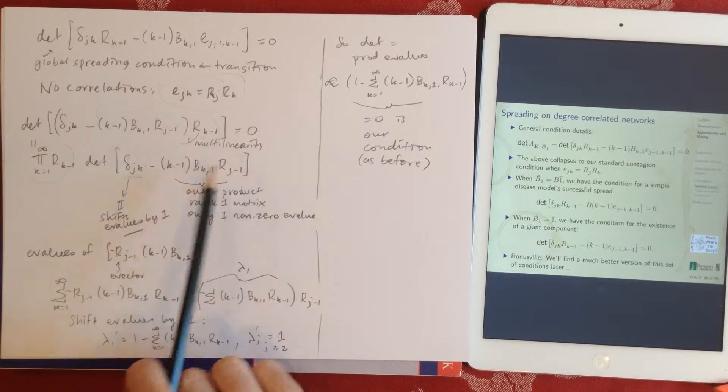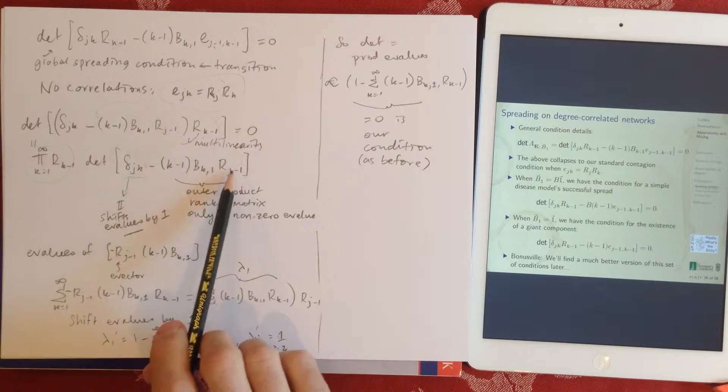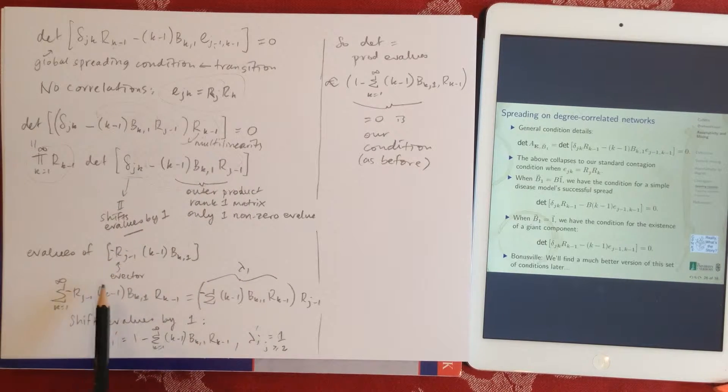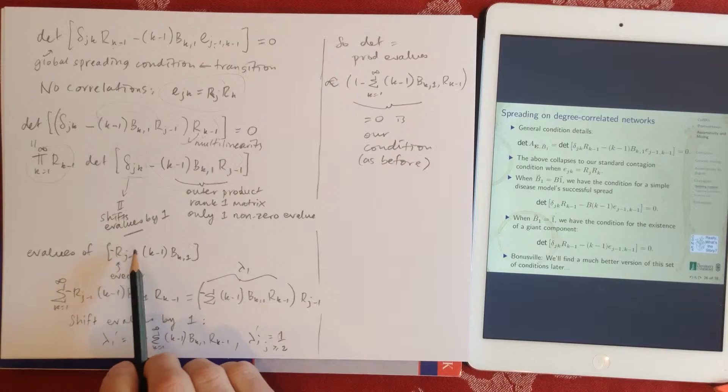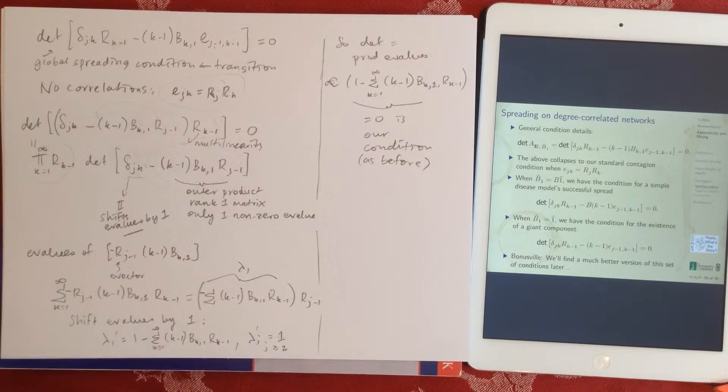As I said, it's an outer product, so we'll write it in the, we'll put the j first, that's what we should have. So outer products are simple, right? So it's some row vector times a column vector times a row vector. So whatever that first column vector is, is the eigenvector.